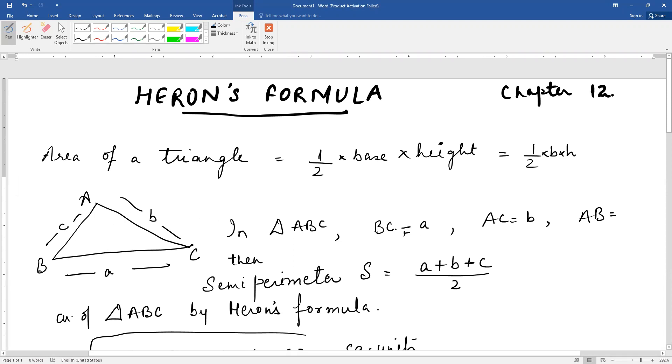This is half base into height. BC is equal to a units, AC is equal to b units, and AB is equal to c units. So semi-perimeter, perimeter is sum of the sides. Perimeter is A plus B plus C. Semi-perimeter means half-perimeter. Therefore, semi-perimeter S is given by A plus B plus C by 2. Now Heron is a mathematician.